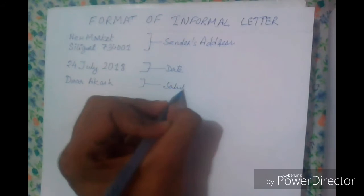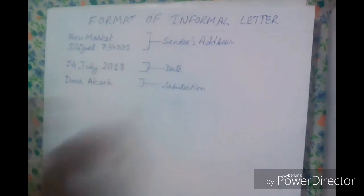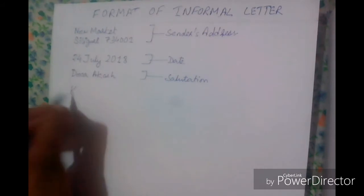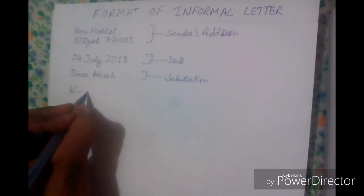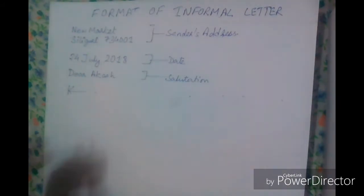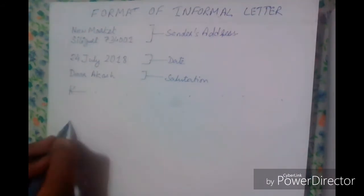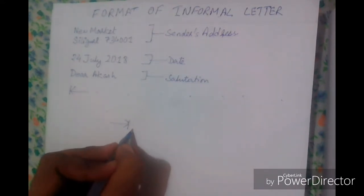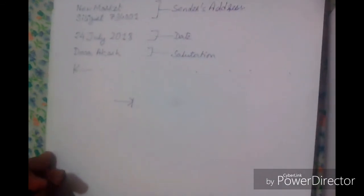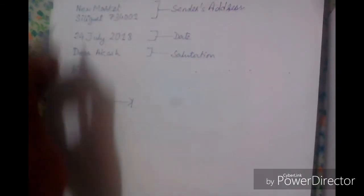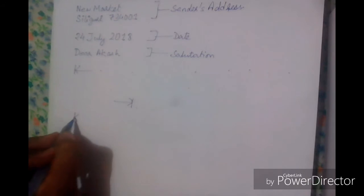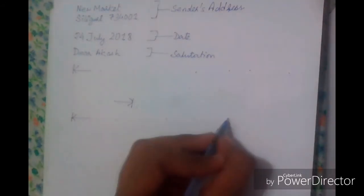Then you begin your letter — leave one line and start your first paragraph, which is the body of your letter. When your first paragraph ends, put a full stop. Leave a line again and begin the next paragraph at the same starting position. Then write your second paragraph. When that ends, put a full stop.